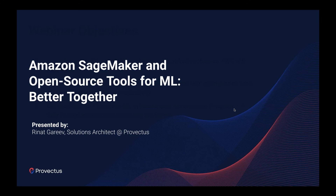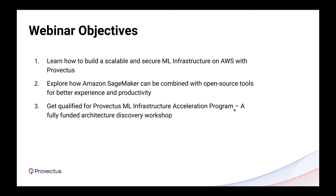Our objectives today. First, learn how to build scalable and secure machine learning infrastructure on AWS and how Provectus can help you along this journey. We'll share best practices on how Amazon SageMaker can be combined with open source tools for both experience and productivity. Finally, we'd like you to take something home and offer a follow-up collaboration session to deep dive into your current ML infrastructure and provide actionable recommendations from Provectus machine learning experts.